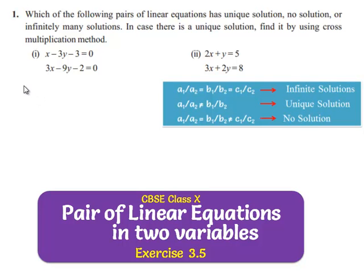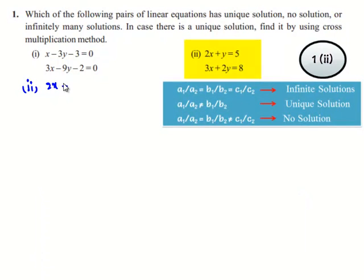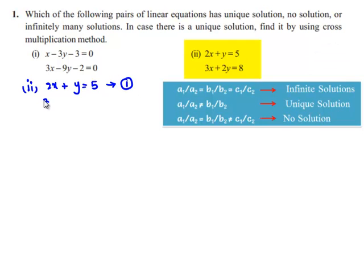Now let us see the second bit, which is 2x plus y is equal to 5 — name this as equation number 1 — and 3x plus 2y is equal to 8, this is equation number 2.